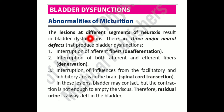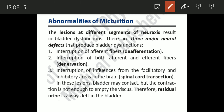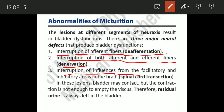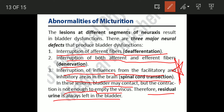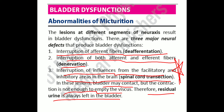Bladder dysfunction arises from lesions at different levels. There are three major neural defects: (1) de-afferentation — interruption of afferent fibers; (2) de-innervation — interruption of both afferent and efferent fibers; (3) spinal cord transection — interruption of facilitatory and inhibitory influences from the brain. In these lesions, the bladder may not contract sufficiently, leaving residual urine and causing incomplete voiding.